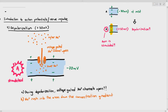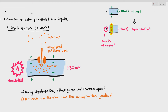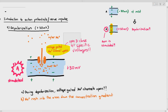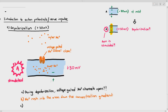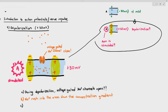As sodium ions continue going in, the inside starts to become more positive, because sodium is a positive ion. So from negative 70 millivolts, it becomes negative 50, and as more sodium ions keep going in, it goes up to positive 30 millivolts. That's how you achieve a membrane potential of positive 30 millivolts — because sodium ions rushed into the axon. The sodium ion channel is a voltage-gated channel, meaning it opens and closes at specific voltages. When the voltage reaches positive 30 millivolts, the channel closes, and because the inside now has a higher voltage than the outside, the charge flips. That's how you get the positive symbols inside and the negative symbols outside.